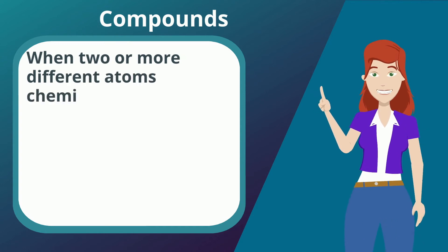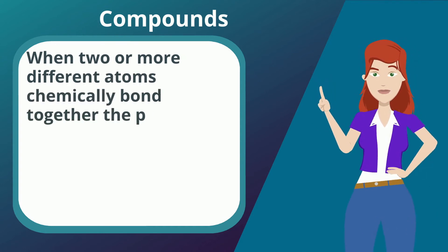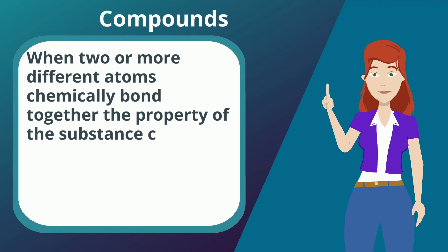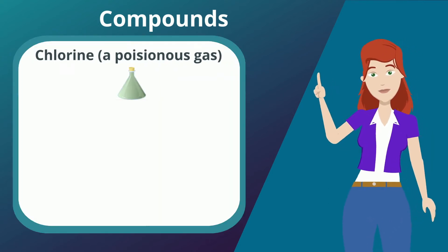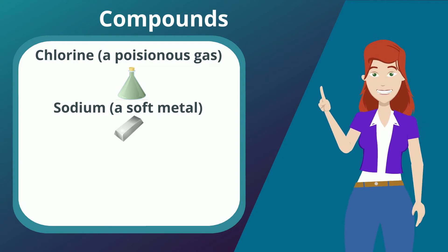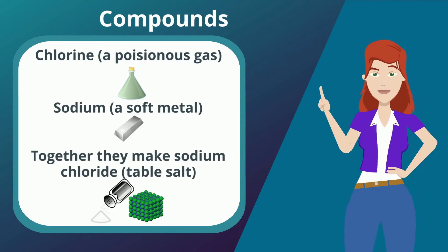When two or more different atoms chemically bond together, the property of the substance changes. Chlorine is a poison gas, sodium a soft metal. Together they make sodium chloride, table salt.